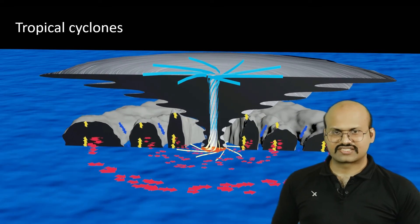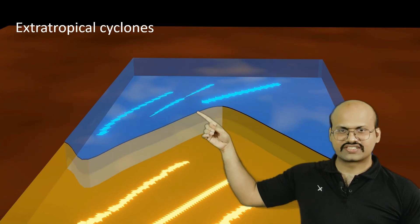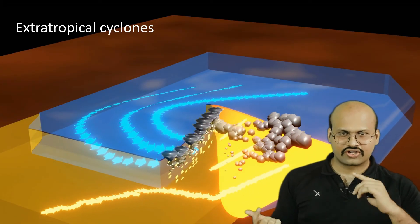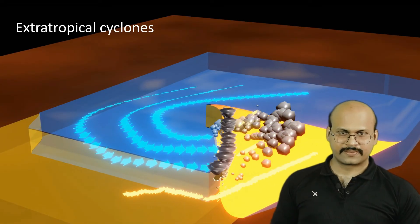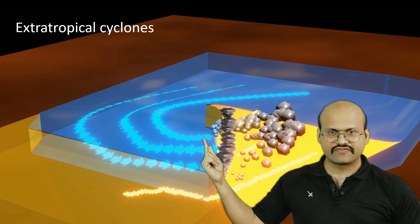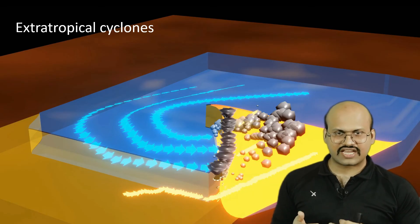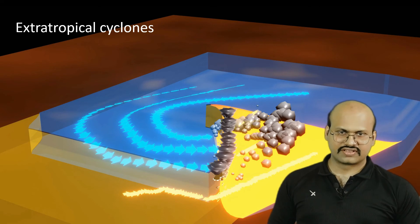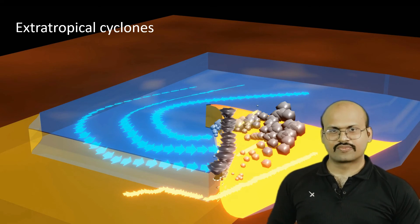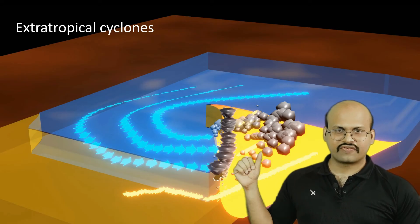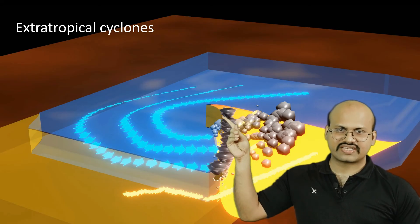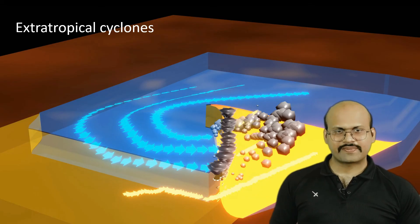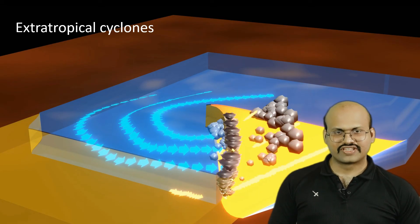In an extratropical cyclone, there is a low pressure region with cold and warm air moving around it in a circular motion, and we see rainfall in these frontal regions — this can also be called cyclonic rainfall. It can also be called frontal rainfall because there are two types of air masses and the boundary between them is where this rainfall is seen. These types of rainfalls can also occur without cyclonic airflow.